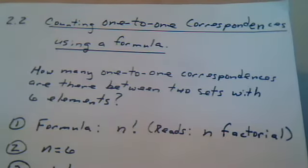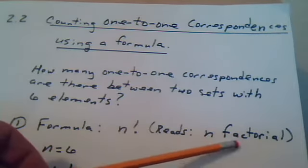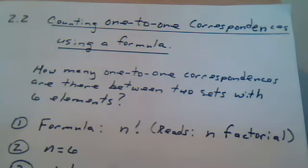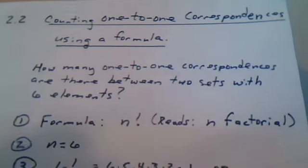The formula looks like this. It reads n factorial. Notice the word factorial includes the word factor, which implies a multiplication. So we're going to be doing the multiplication a certain way.